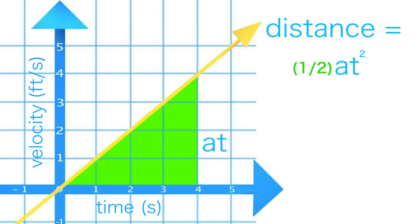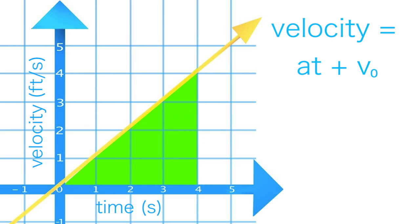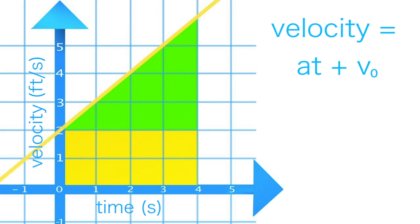Now let's find the distance equation for an accelerating object that has an initial velocity. That means its velocity equation has a y-intercept term, which is the object's initial velocity. If we break apart the area on this graph, we get a rectangle and a triangle.